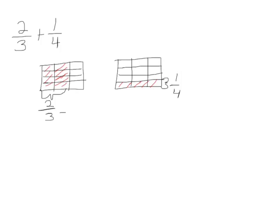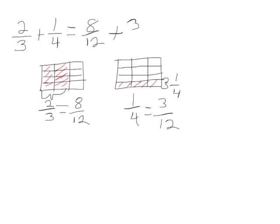Our two-thirds is the same as one, two, three, four, five, six, seven, eight — we have eight-twelfths. And our one-fourth is the same as three-twelfths. So now we are adding eight-twelfths plus three more twelfths, and eight plus three is eleven, so we would have eleven-twelfths. Two-thirds plus one-fourth equals eleven-twelfths.